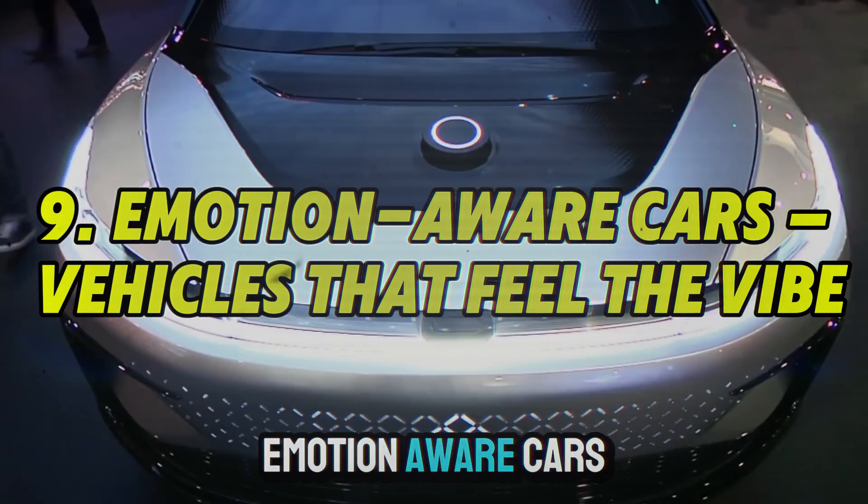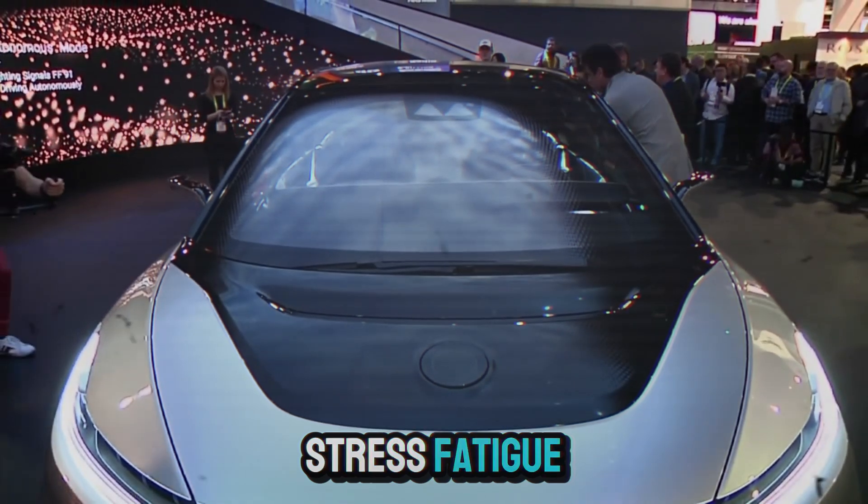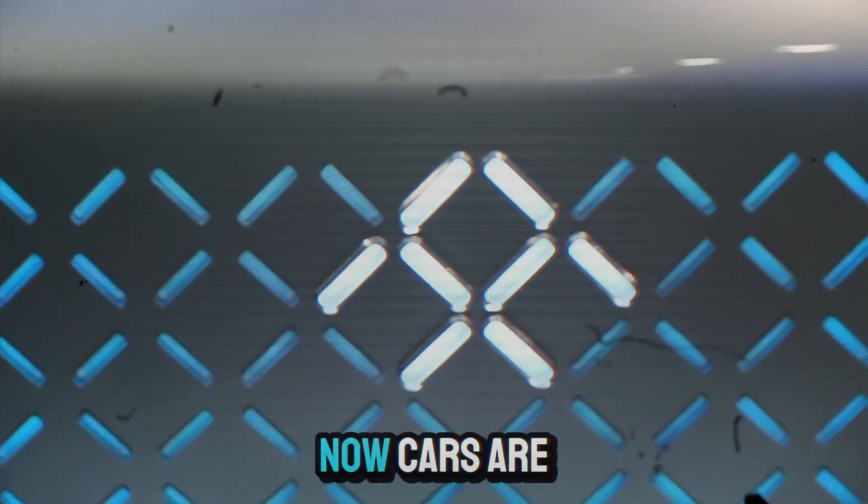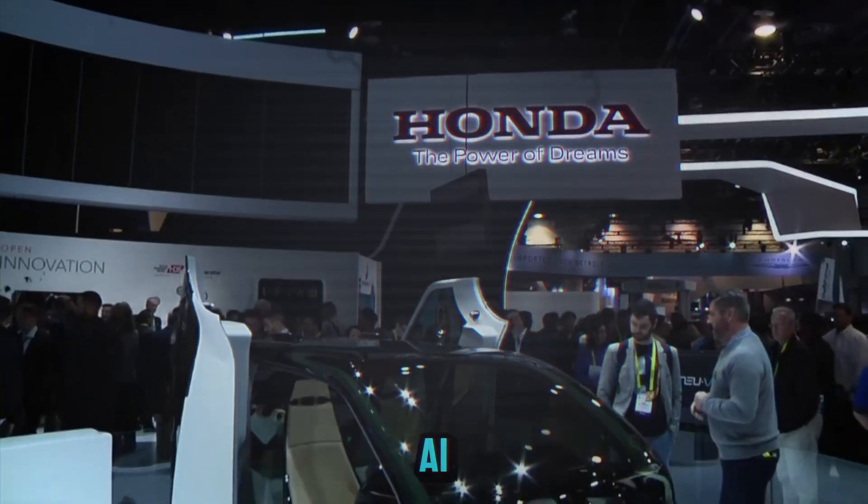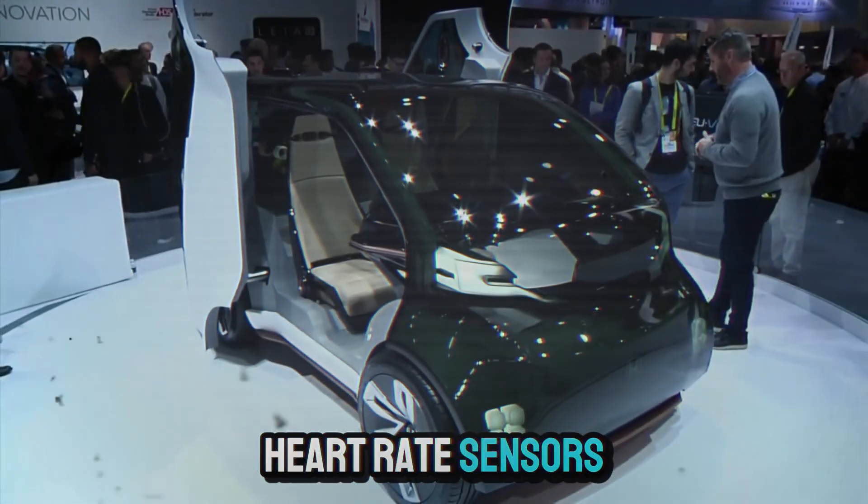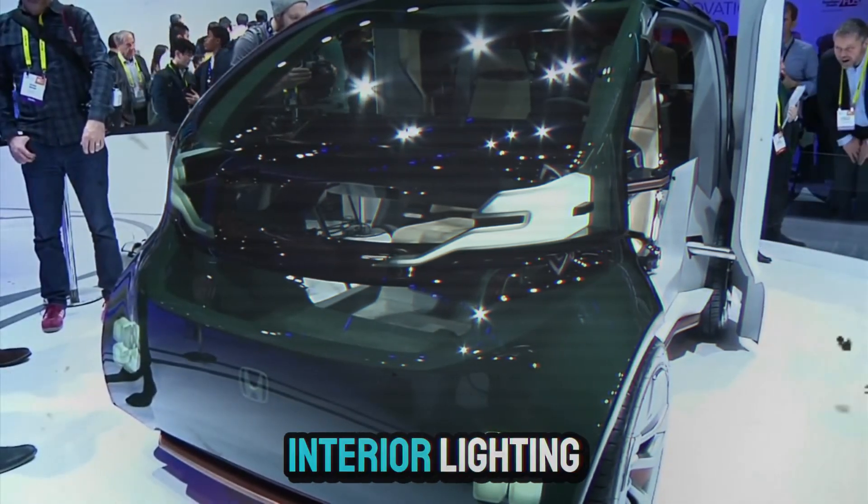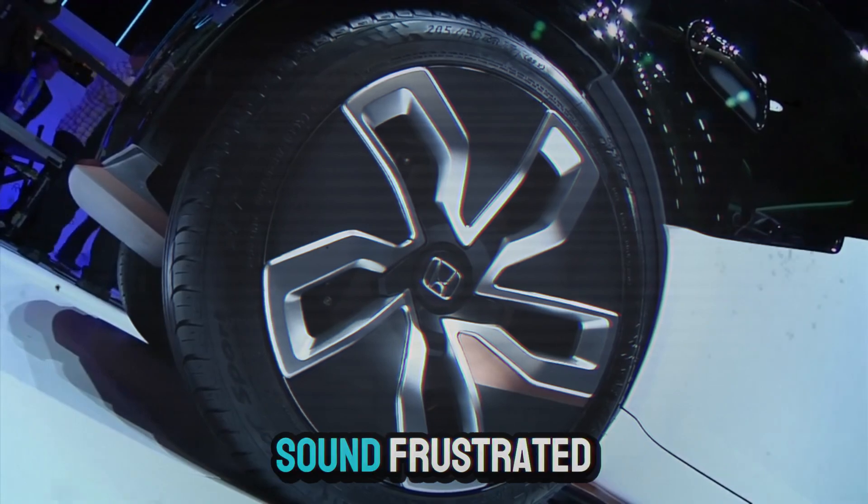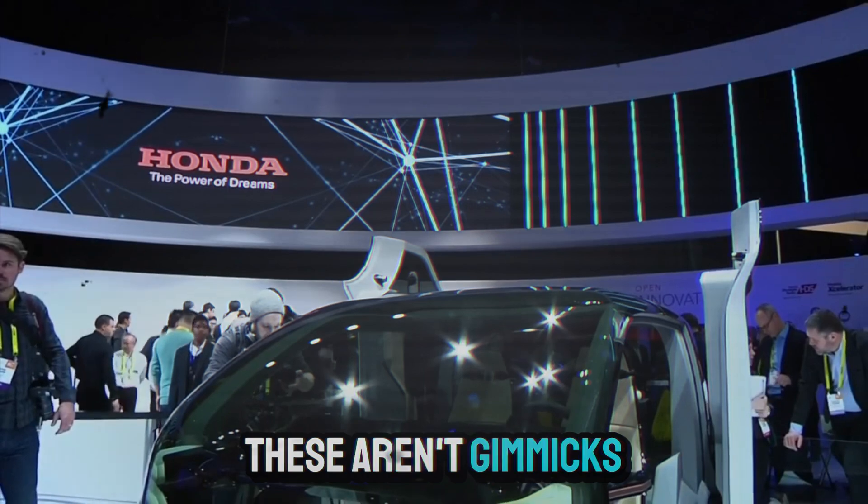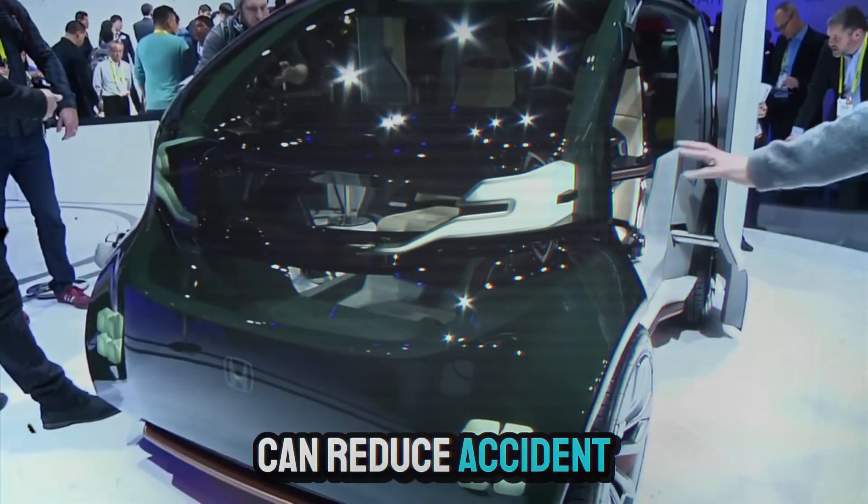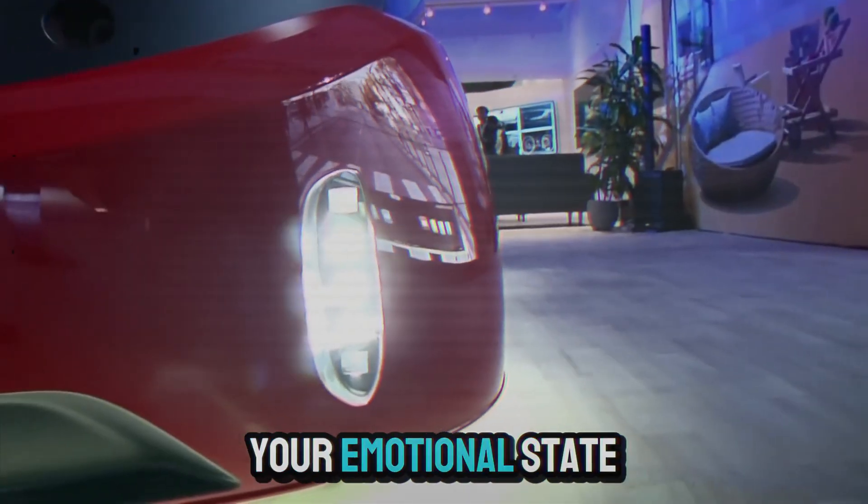9. Emotion aware cars, vehicles that feel the vibe. Driving is emotional. Stress, fatigue, road rage, all play into how we drive. Now cars are responding. Mercedes, BMW, and Hyundai are developing in-vehicle AI that uses facial cameras, heart rate sensors, and voice analysis to adjust driving environments. Feel overwhelmed? The car dims interior lighting, lowers audio, and activates calm mode. Sound frustrated? It may suggest a scenic route or recommend a rest stop. These aren't gimmicks. Studies show emotion-aware cars can reduce accident risk and driver fatigue. The goal isn't to control you. It's to support your emotional state behind the wheel.